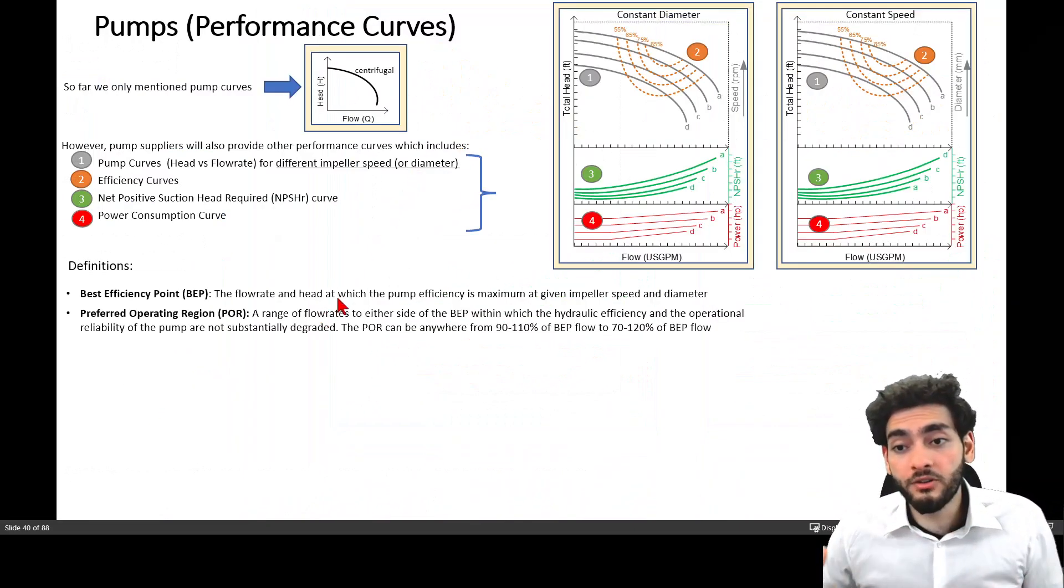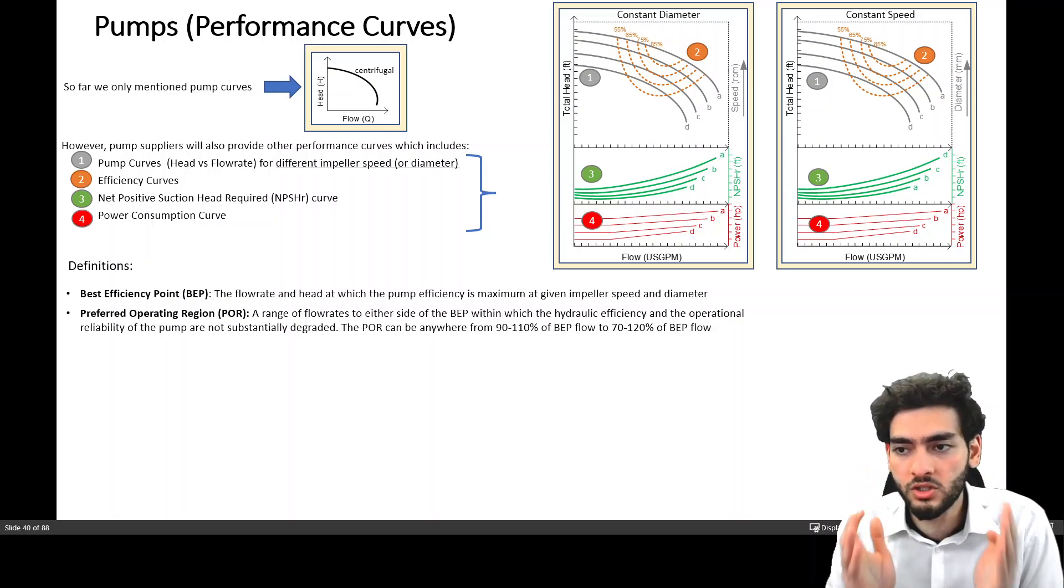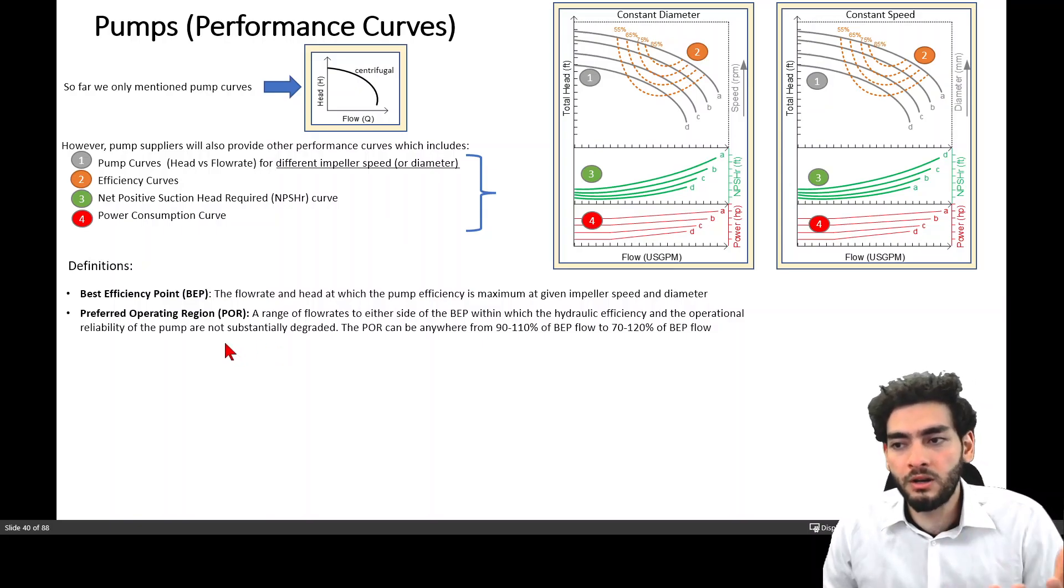The preferred operating region is a range of flow rates to either side of the best efficiency point within which the hydraulic efficiency and the operational reliability of the pump are not substantially degraded. And the preferred operating region can be anywhere from 90% to 110% of the best efficiency point and the flow to be between 70% to 120% of the best efficiency point flow.